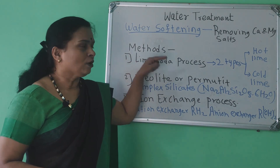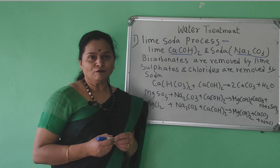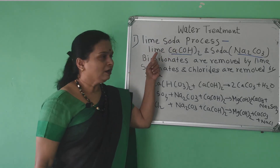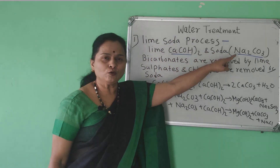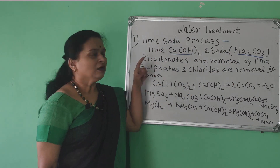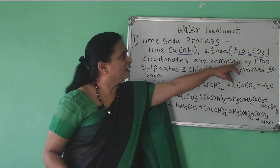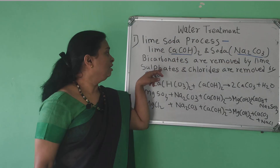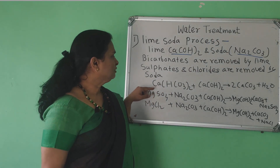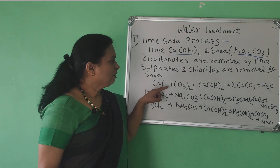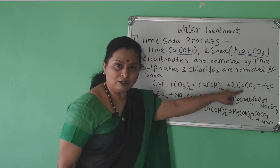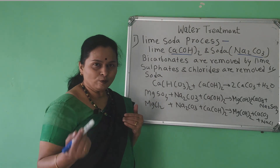The first process of water softening is the lime soda process. In this case, lime (calcium hydroxide) and soda (sodium carbonate) are used for softening the water. Bicarbonates of calcium and magnesium are removed by lime, while sulfates and chlorides are removed by soda. When lime is added to calcium bicarbonate, insoluble calcium carbonate is formed, which can be removed by filtration.